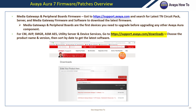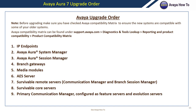When you're ready to deploy any system software, check that you are downloading the latest software or patches under support.avaya.com/downloads. Before upgrading, make sure you have checked Avaya's compatibility matrix to ensure the new systems are compatible with your older systems. The Avaya compatibility matrix can be found under support.avaya.com, Customization, Diagnostics and Tools Lookup, Reporting and Product Compatibility, Product Compatibility Matrix.